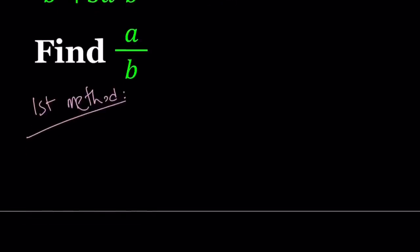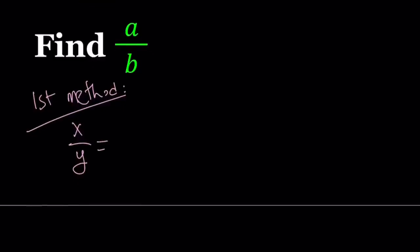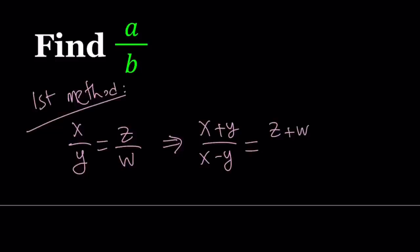For my first method, I'm going to be using a method called componendo dividendo. Componendo dividendo works like this: if you have x over y equals z over w — that is like a proportion — then we can safely say that x plus y over x minus y is going to be the same as z plus w over z minus w. So whatever you do on the left-hand side, as long as you do it on the right-hand side, those two ratios are going to be equal.